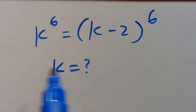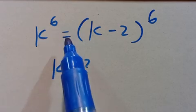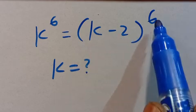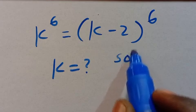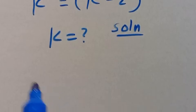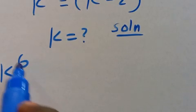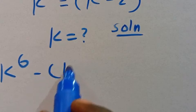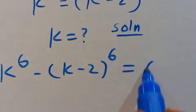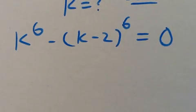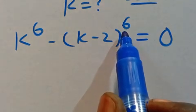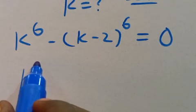What is the value of k, given that k to the power of six equals open brackets k minus two in parentheses to the power of six? So from here we can have this as k to the power of six minus k minus two in parentheses to the power of six equals zero.